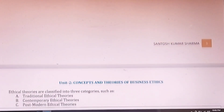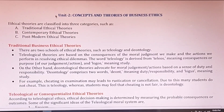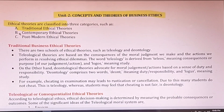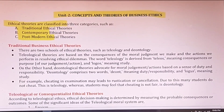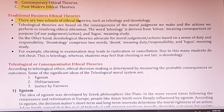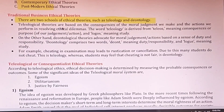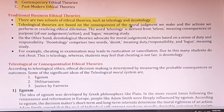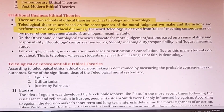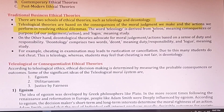Unit 2 covers concepts and theories of business ethics. We study different ethical theories divided into three types: traditional, contemporary, and post-modern. Under traditional theories, there are two schools: teleology and deontology. In teleology, theories are based on the consequences of moral judgment and the actions we perform in resolving ethical dilemmas. The word 'teleology' is derived from 'telos,' meaning consequences or result, and 'logos,' meaning to study.